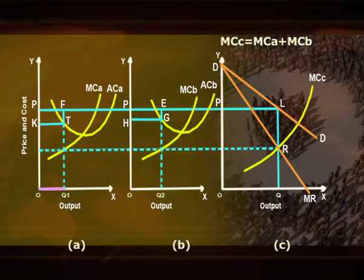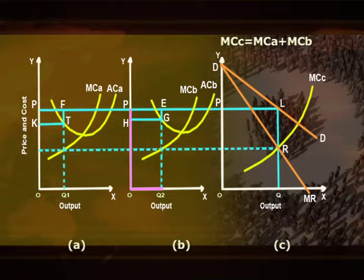Figure A shows that with output OQ1 and cartel price OP, the profits made by firm A are equal to PEGH. Similarly, figure B shows that with output OQ2 and cartel price OP, the profits made by firm B are equal to PEGH. Total joint profits made by the cartel are maximized by equating combined marginal cost MCC with combined marginal revenue MR.